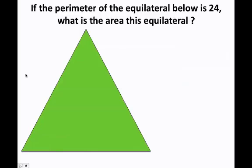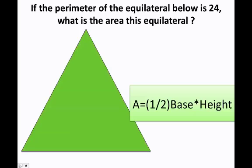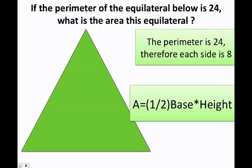Let's go ahead and do an exercise. If the perimeter of the equilateral triangle below is 24, what is the area of this equilateral triangle? First I need to remember that the area of a triangle is one half the base times the height. The problem is telling me that the perimeter is 24, therefore I know that each side has to be 8. Now I know that the base is equal to 8, but I don't know how much the height is.